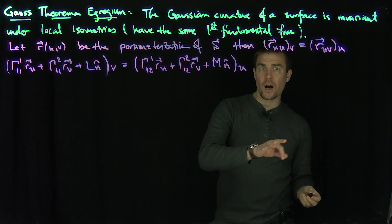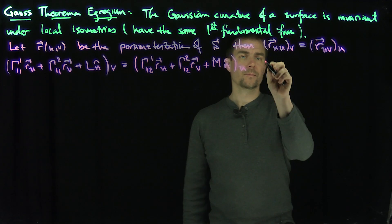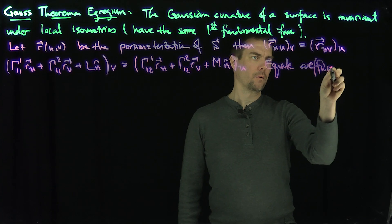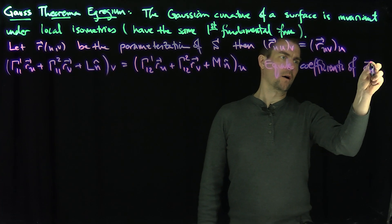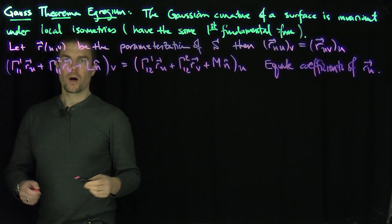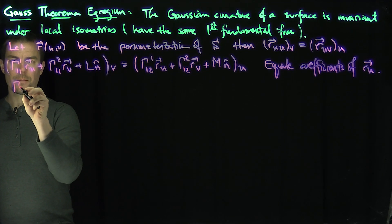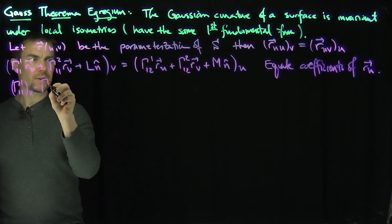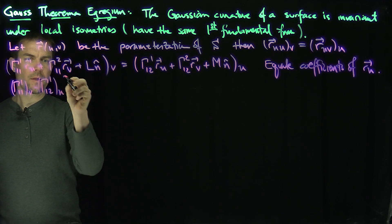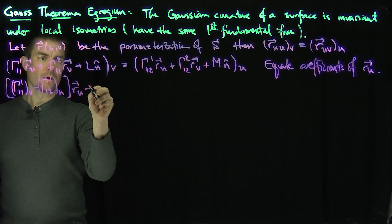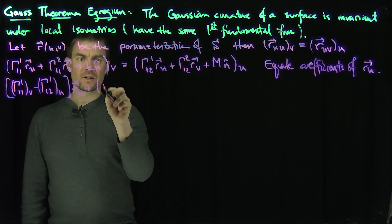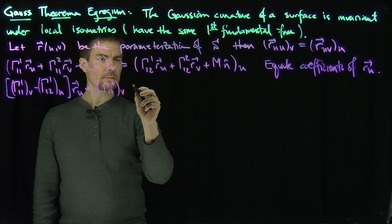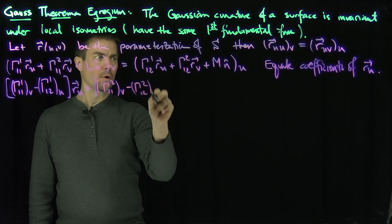Unlike the Codazzi-Mainardi equations, I'm going to equate the coefficients of R_U. So expanding out, from the V derivative of Γ¹₁₁ we get an R_U term. The U derivative of that term gives an R_U term. The R_V terms come from Γ¹₁₂ differentiated in V, minus Γ¹₂₂ differentiated in U.